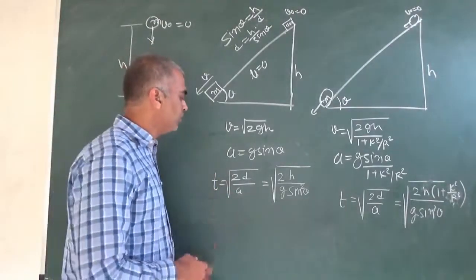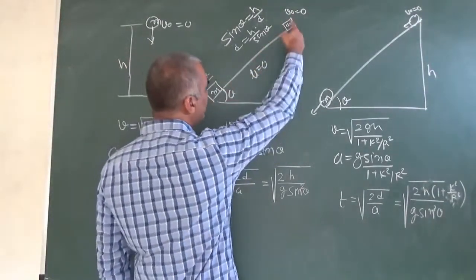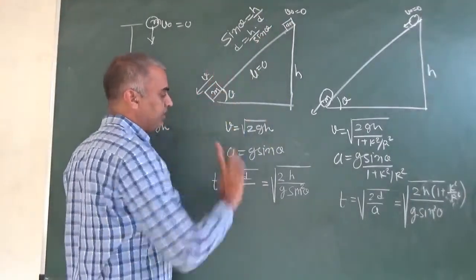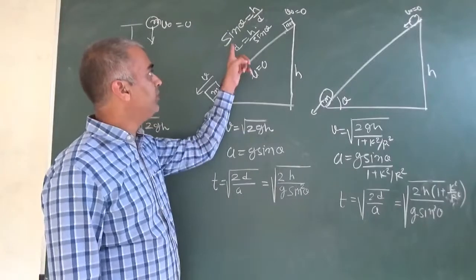This is v squared given by 2ax sin theta.